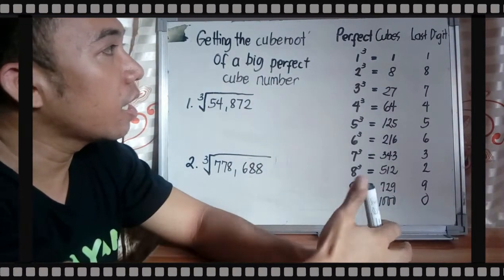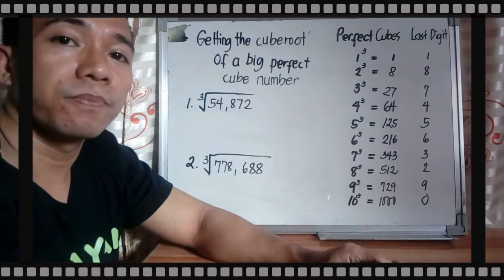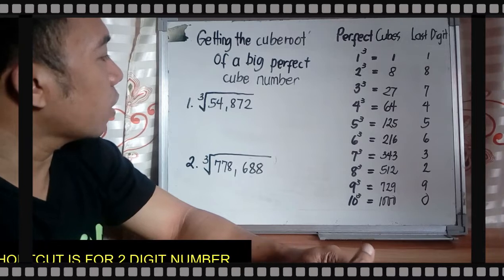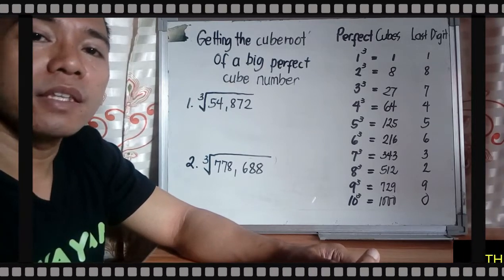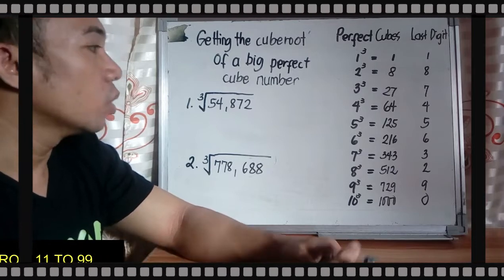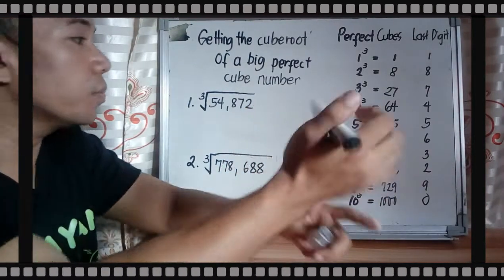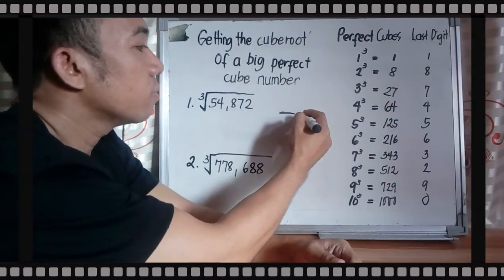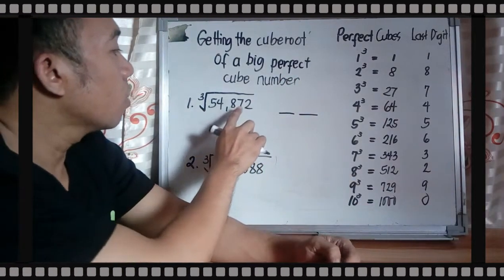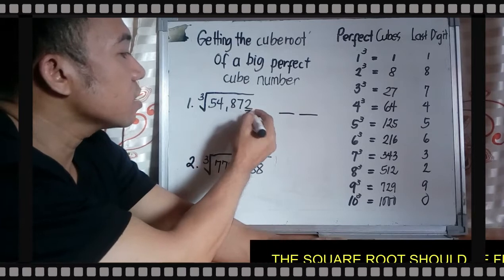Let's start. What is the cube root of 54,872? Your cube root here is a two-digit number. So your last digit is 2.